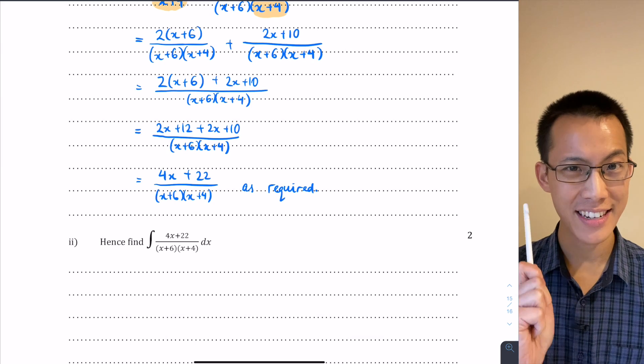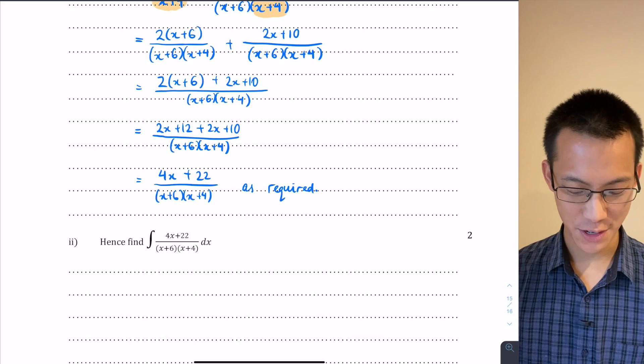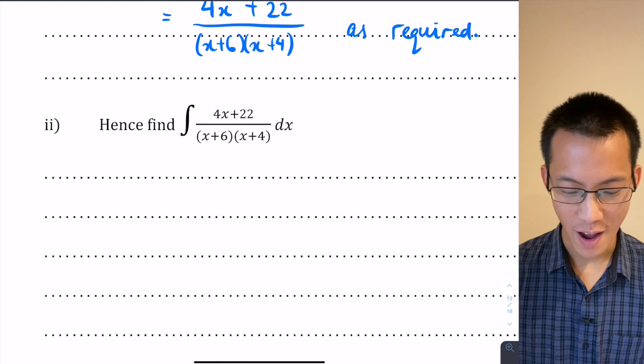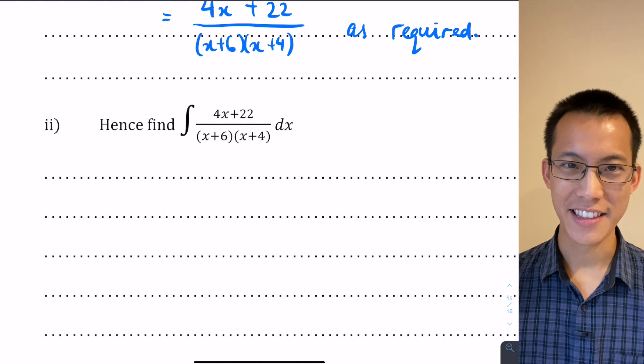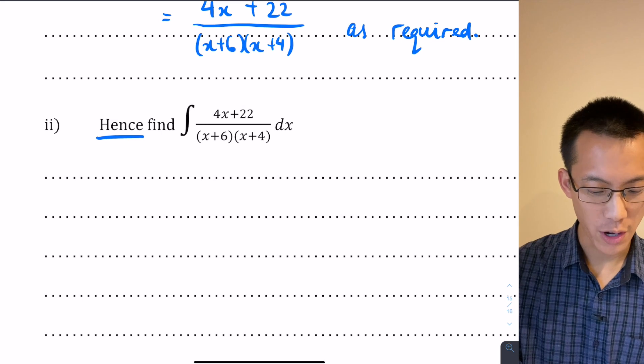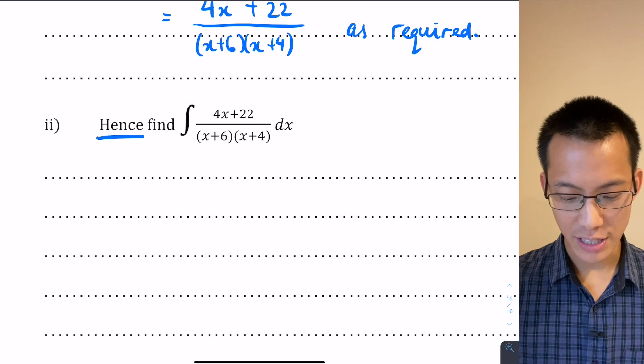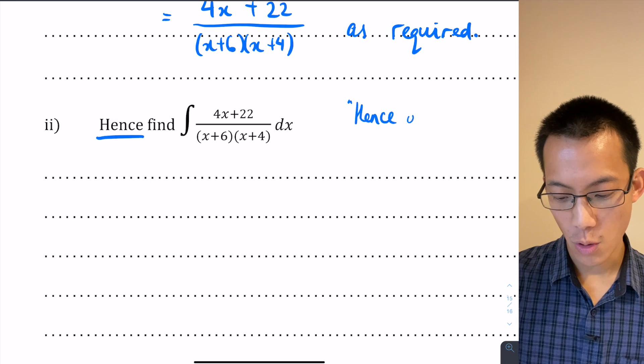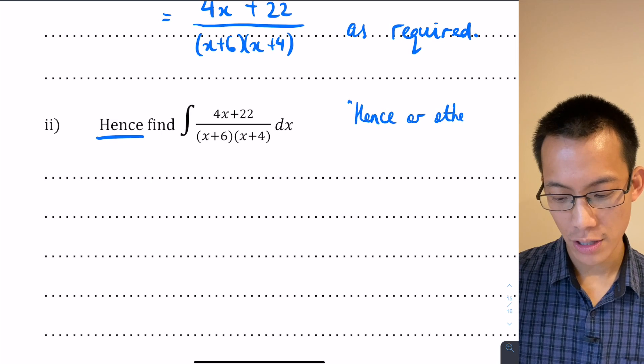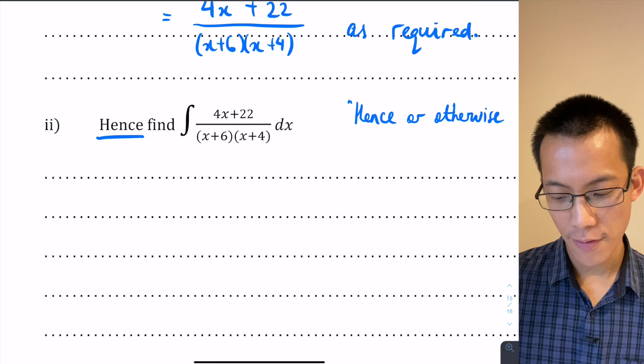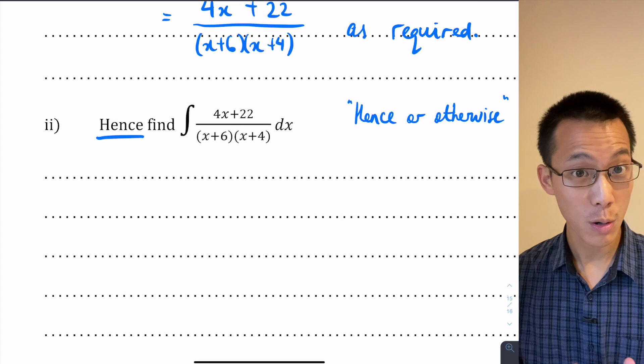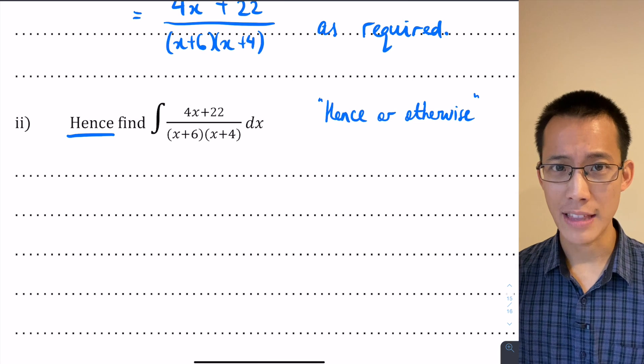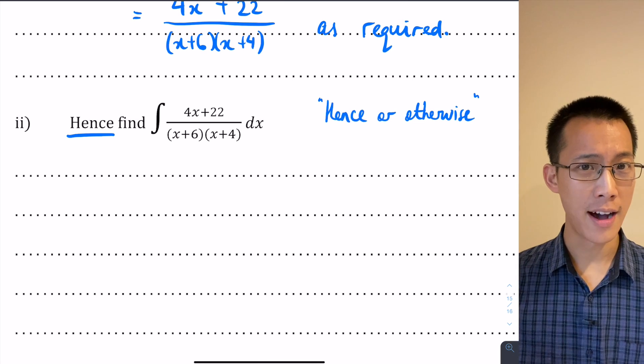That question didn't seem like it had much to do with calculus, and it didn't, until you get to part 2. The last question says hence find the integral of this expression in here. Now you need to pay close attention to this word "hence." Occasionally you'll see the word hence, or sometimes a variation: "hence or otherwise." You'll see this in a question which means something very specific about how you're expected to solve the question.